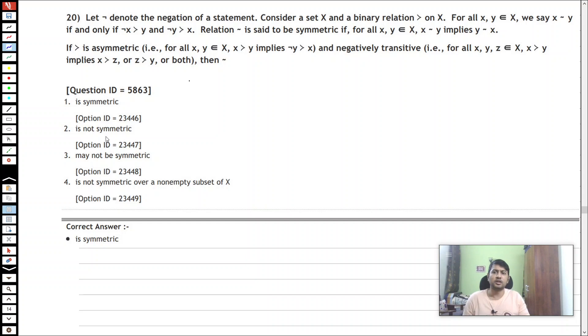So the correct answer here is 'is symmetric', which is verified. I just want to give a proof. So again, I am going to assume that my indifference relation is not symmetric.